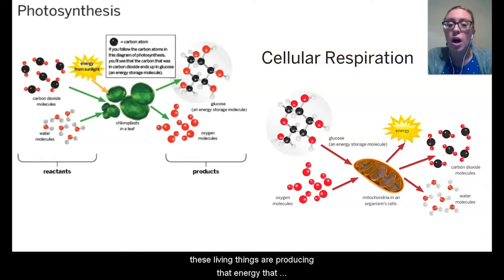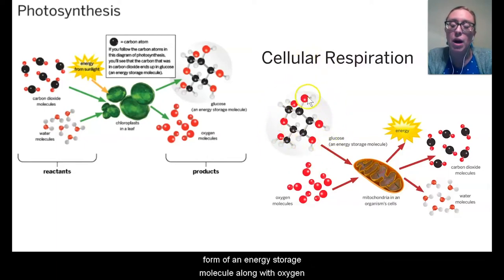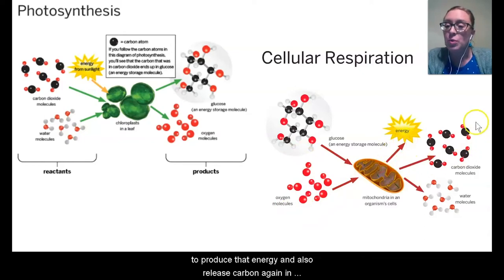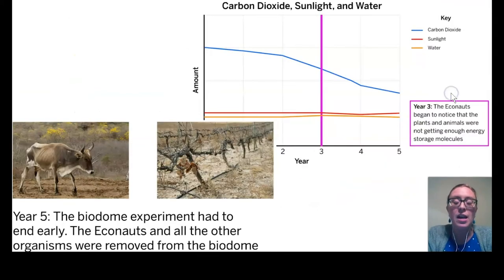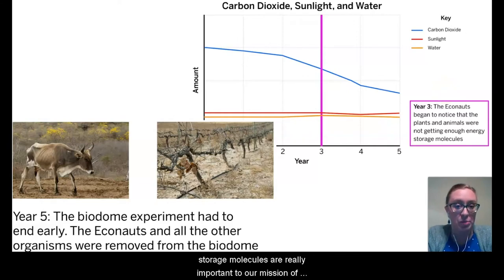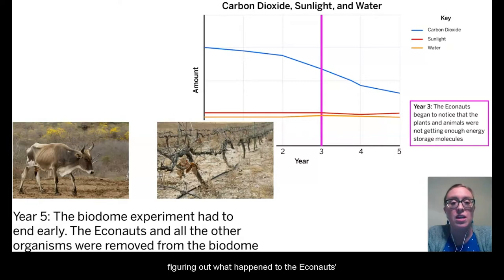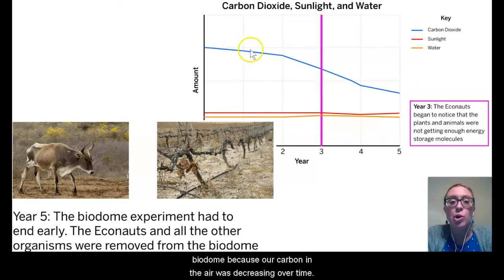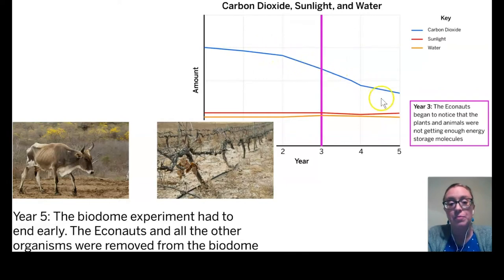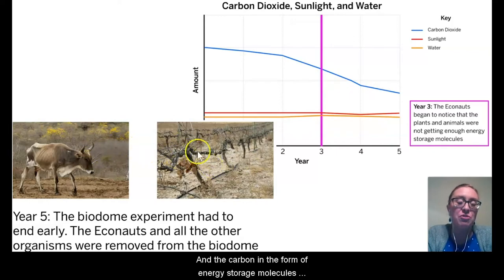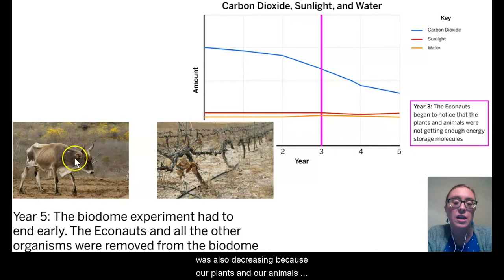As these living things are producing the energy that they need, in cellular respiration they're taking in carbon in the form of an energy storage molecule, along with oxygen, to produce that energy and also release carbon again in the form of carbon dioxide into the air, as well as water. The carbon in the air and in energy storage molecules are really important to figuring out what happened to the Econauts' biodome, because carbon in the air was decreasing over time, and carbon in the form of energy storage molecules was also decreasing because plants and animals didn't have enough to survive.